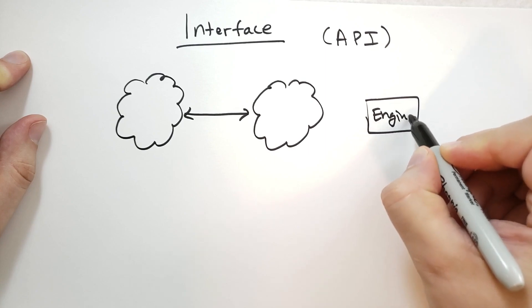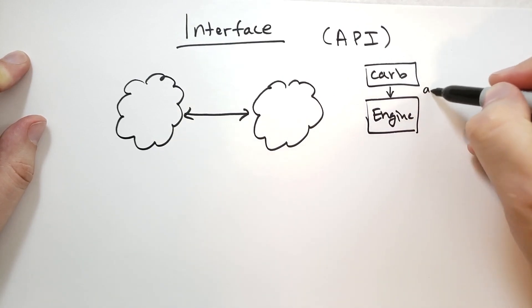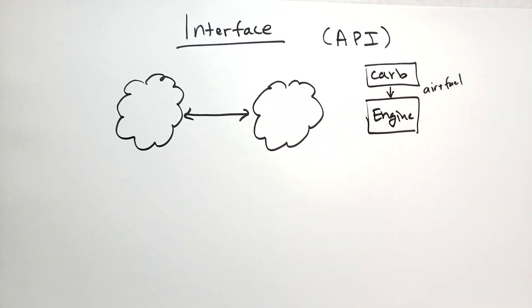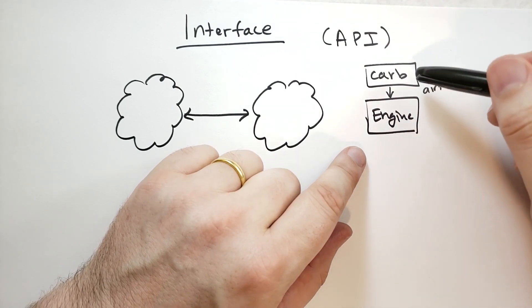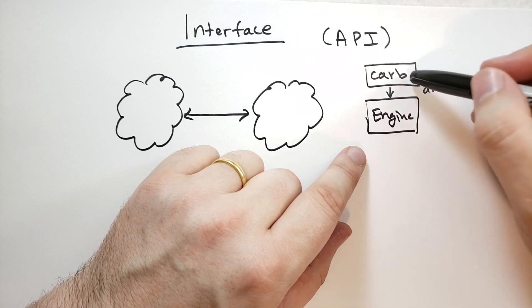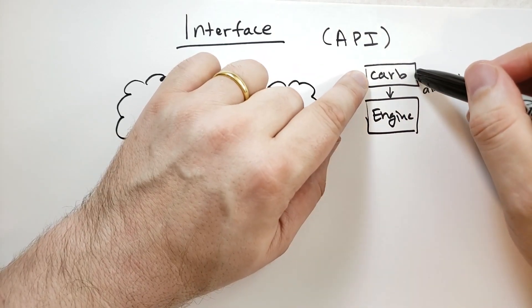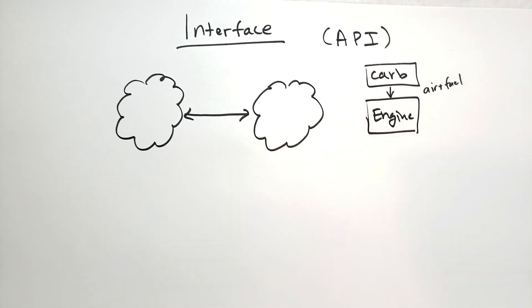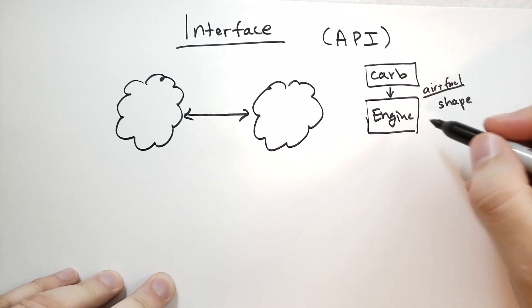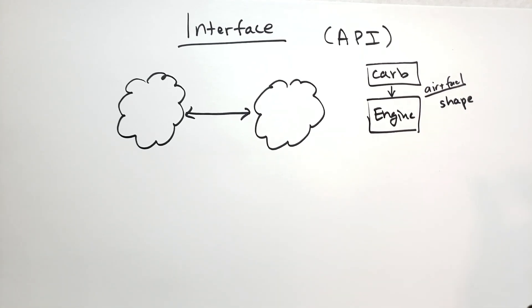So an example here is we have an engine. And on the engine, we have a carburetor. The carburetor's job is to feed air plus fuel into the engine. So the interface between the carburetor and the engine is this. It adds air and fuel mixed together. The engine does not care how the carburetor mixes the air and fuel. In fact, it doesn't care what the thing that sits on top of it is, as long as it delivers air and fuel. You could be having some kind of other device that isn't a carburetor. But as long as it produces air and fuel that it feeds to the engine, the engine won't care.